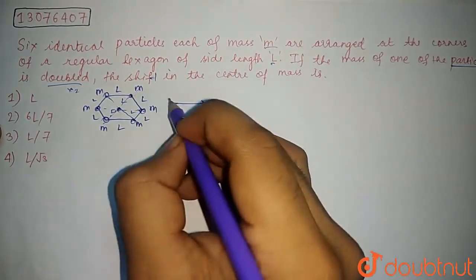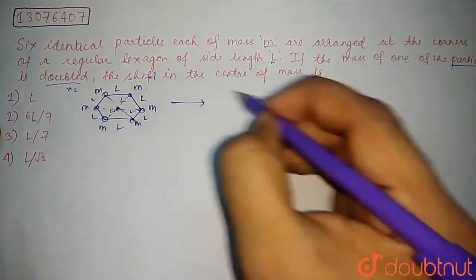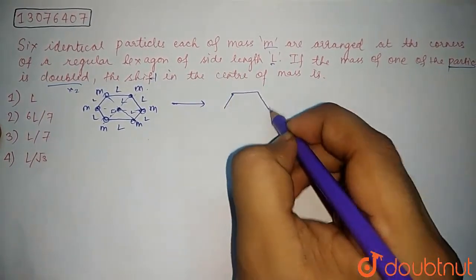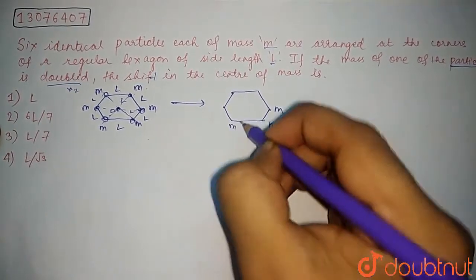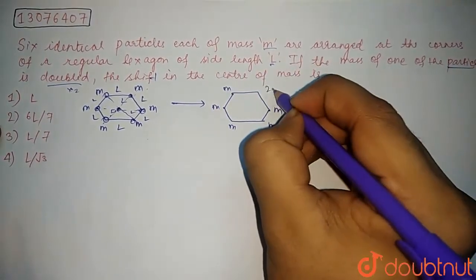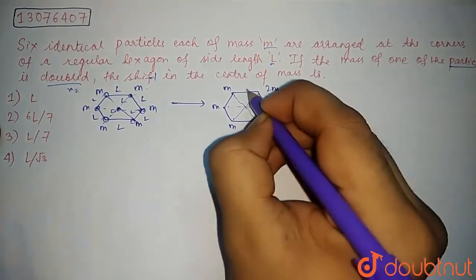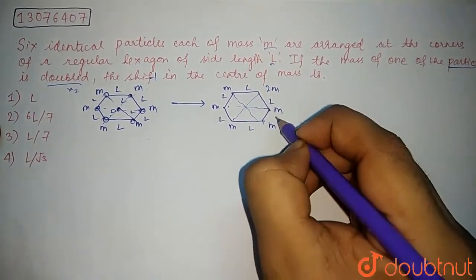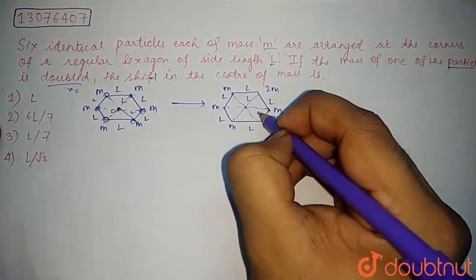Next, what happens? One mass doubles. So the system is M, M, M, M, M, M, and this is 2M. Again, the geometry is same. Here is L, this is L, this is the geometry center, this is L because it's a regular hexagon.